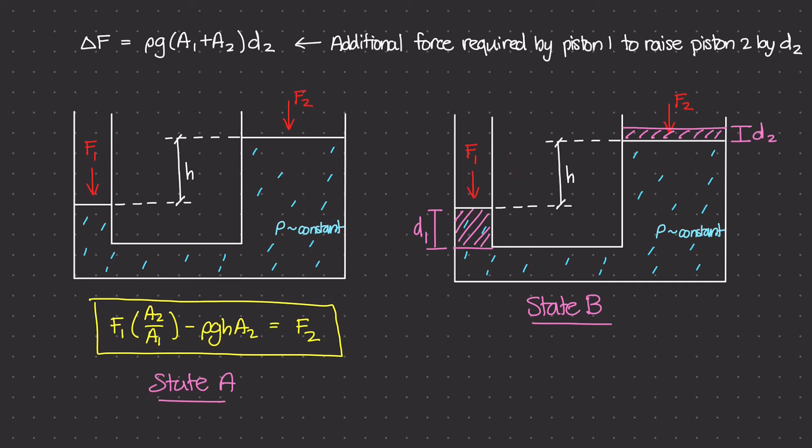So if force 1 is smaller, D1 has to be larger. And that means force 2 is going to be larger, but D2 is going to be smaller, right? The conservation of energy.